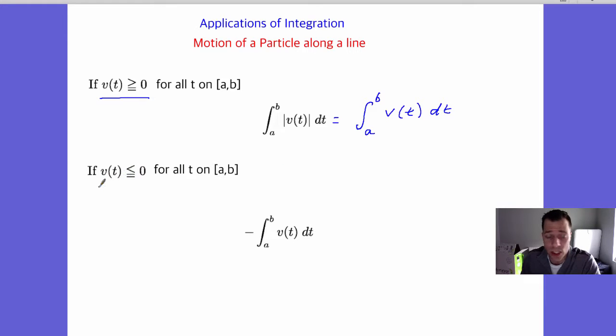But conversely, just opposite, what happens if your velocity function is always less than or equal to zero for t on that interval? Well, then you just take the opposite of whatever v(t) dt equals. So that's two cases.